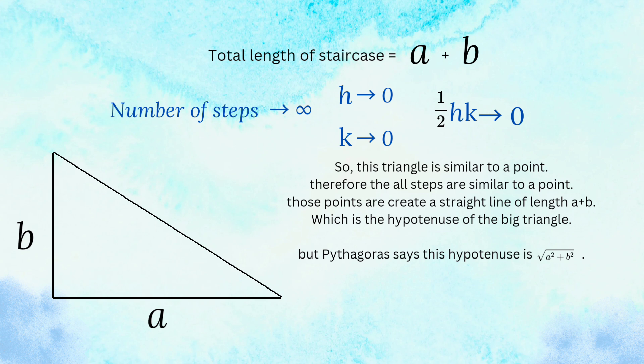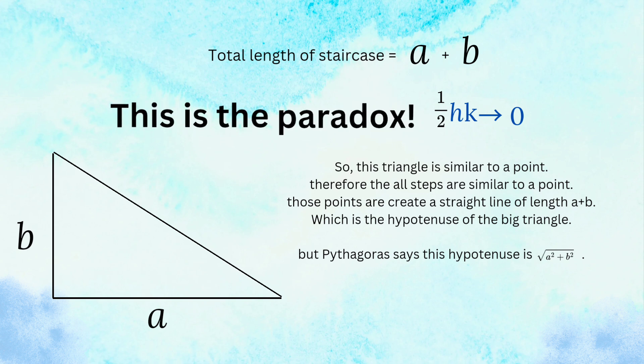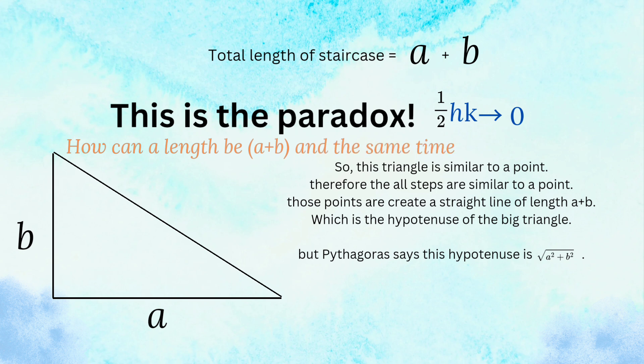But the Pythagorean theorem says this hypotenuse is the square root of A squared plus B squared. This is the paradox. How can a length be A plus B and at the same time the square root of A squared plus B squared?